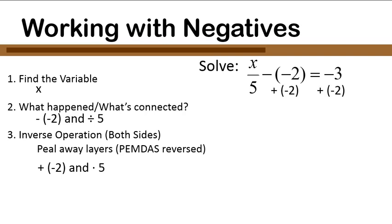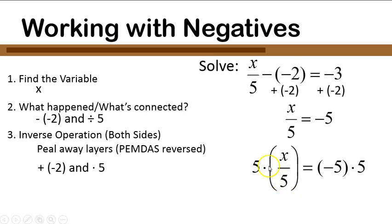Negative 2 minus negative 2 plus negative 2 cancel each other out. And on the right side I have negative 3 plus negative 2, which gives me negative 5. x divided by 5 equals negative 5. Alright, my next step: multiply both sides of the equation times 5.